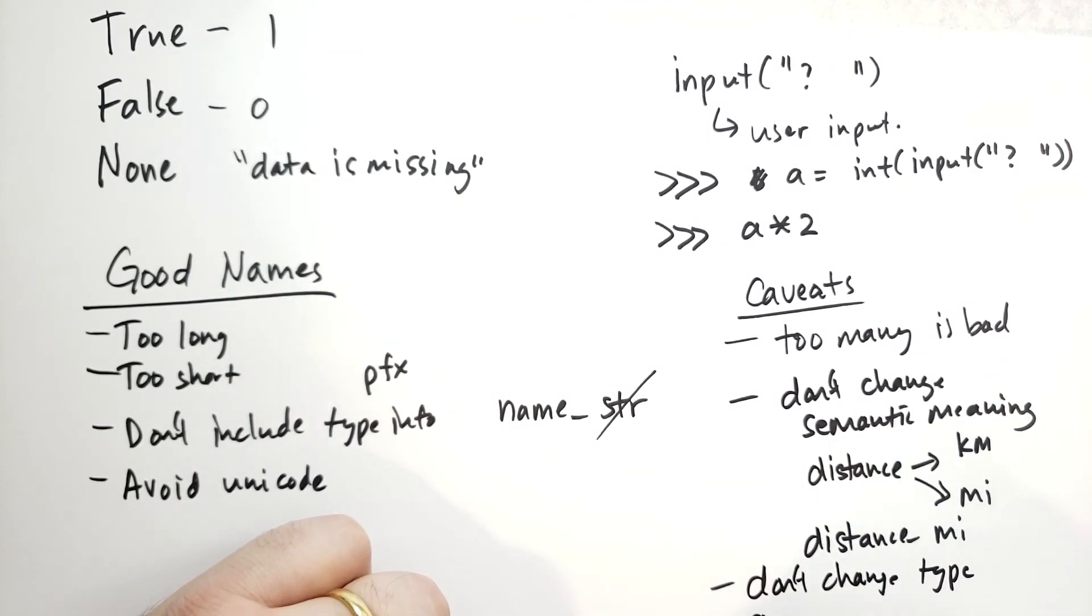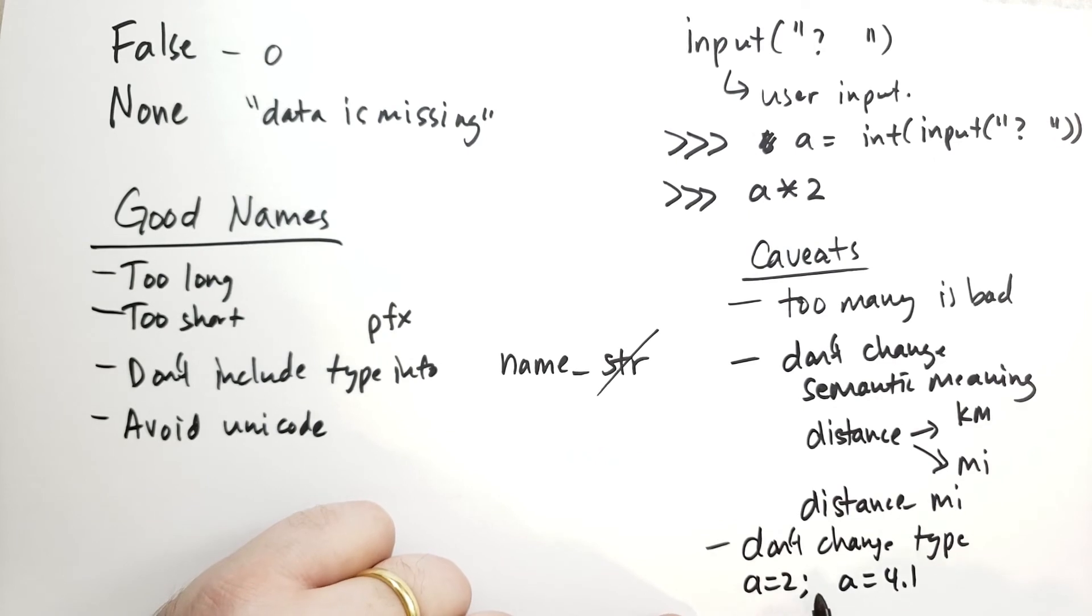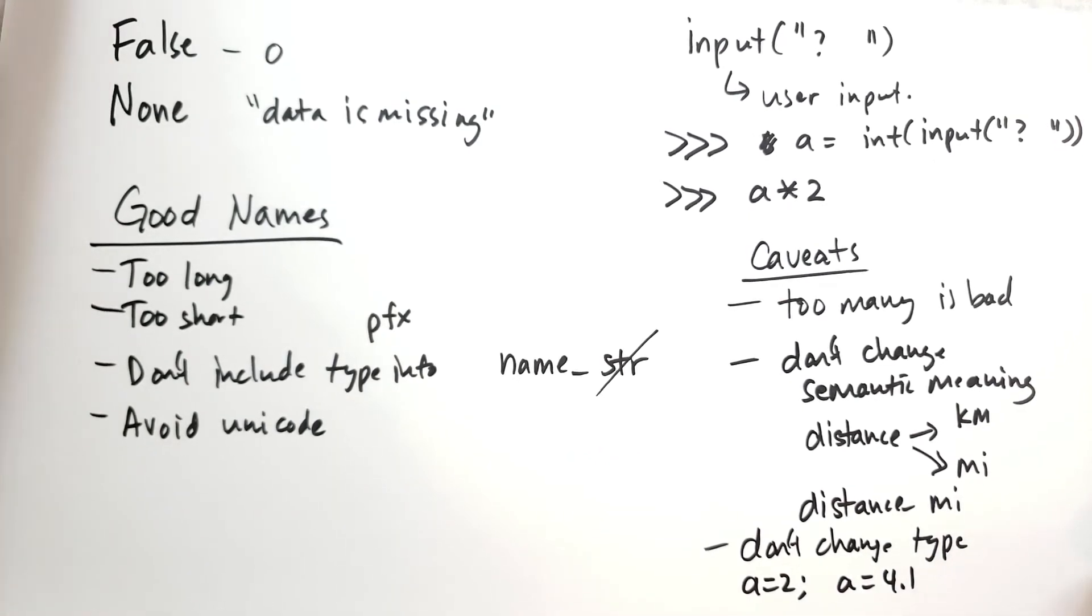And the last thing is don't change the type. What do I mean by that? Don't say a equals 2, and then later say a is equal to 4.1. We're changing the type from int to float. And although Python does allow this, and you can certainly do it if you really, really wanted to, certain problems arise, especially if you're using optimization through something called Cython. Cython expects the types not to change the variables. So, I encourage you not to change the types after you've assigned it for the first time.